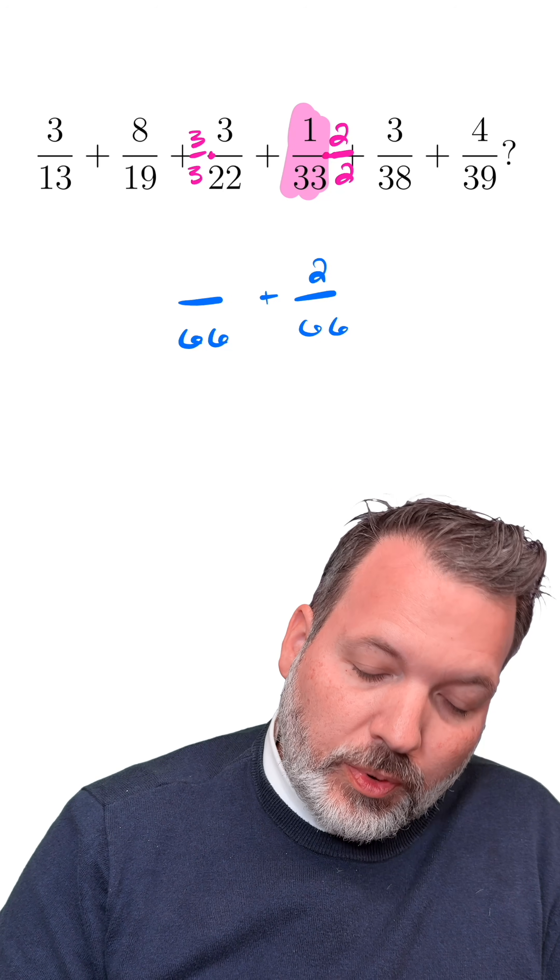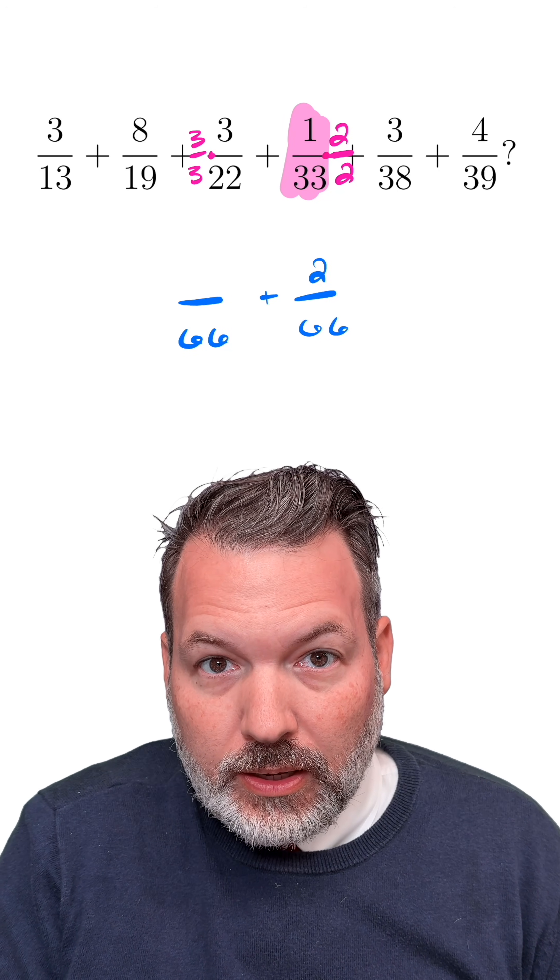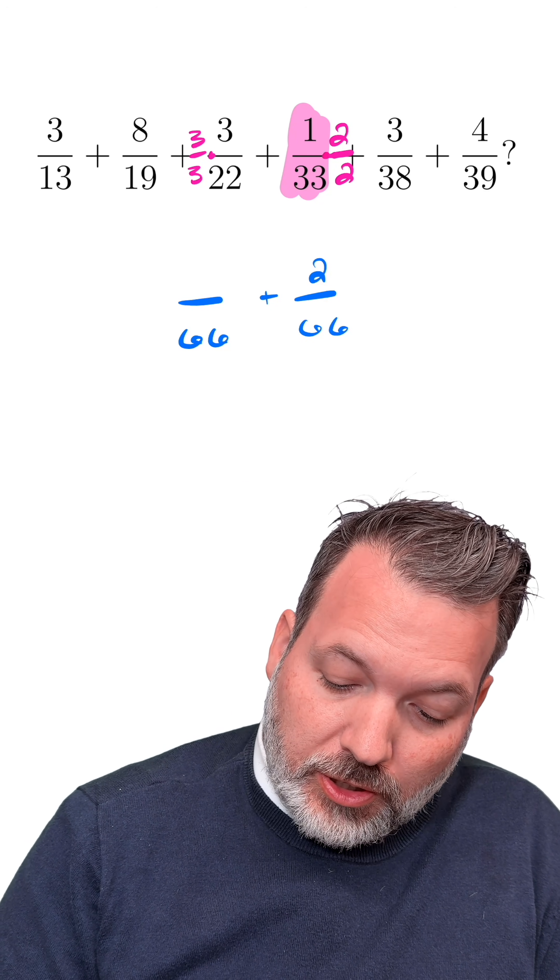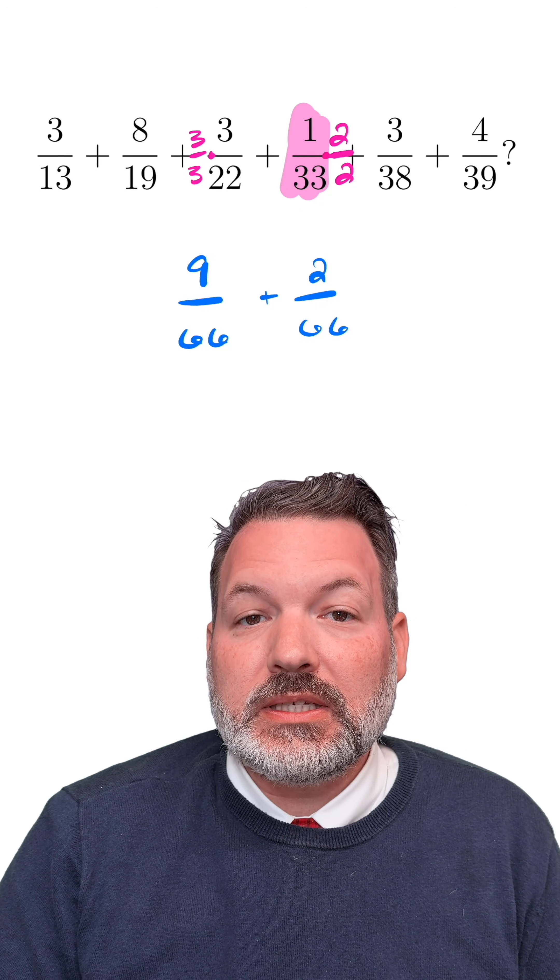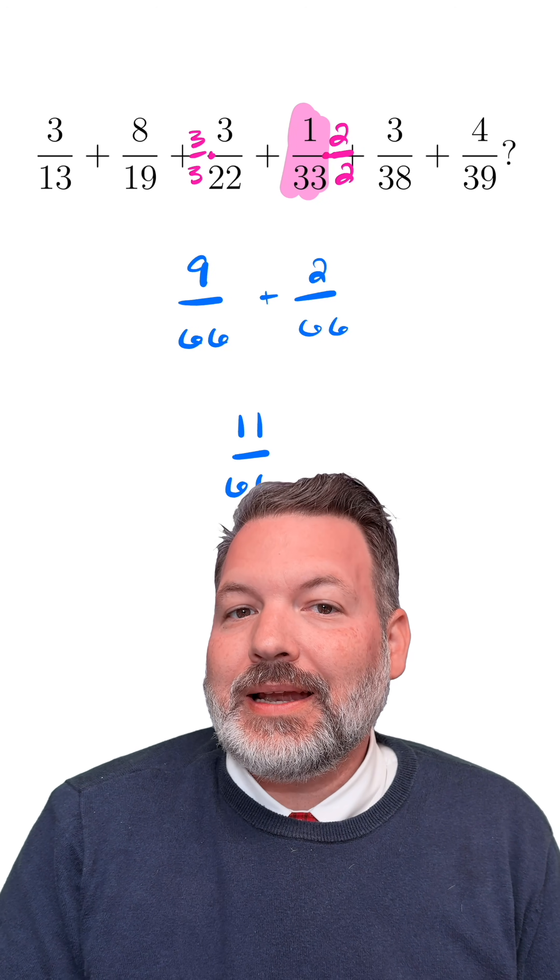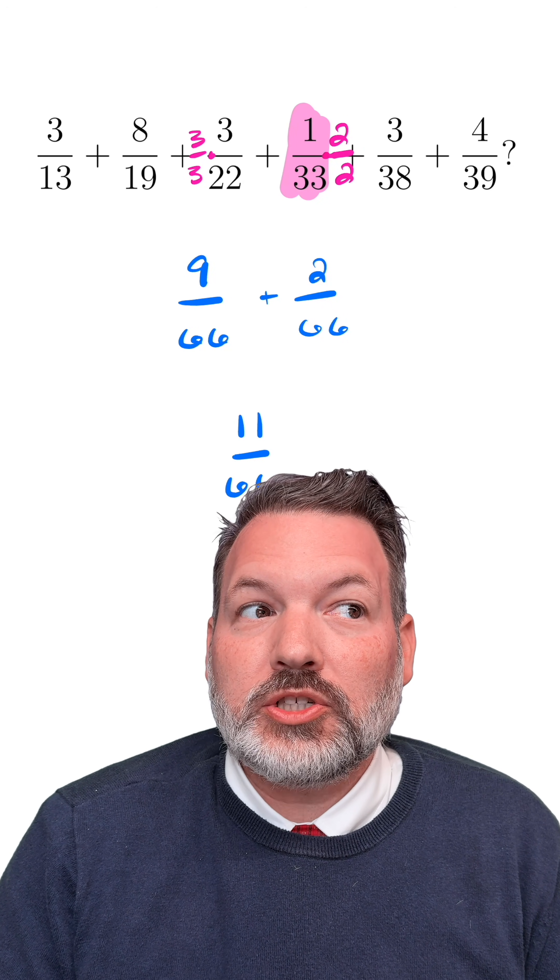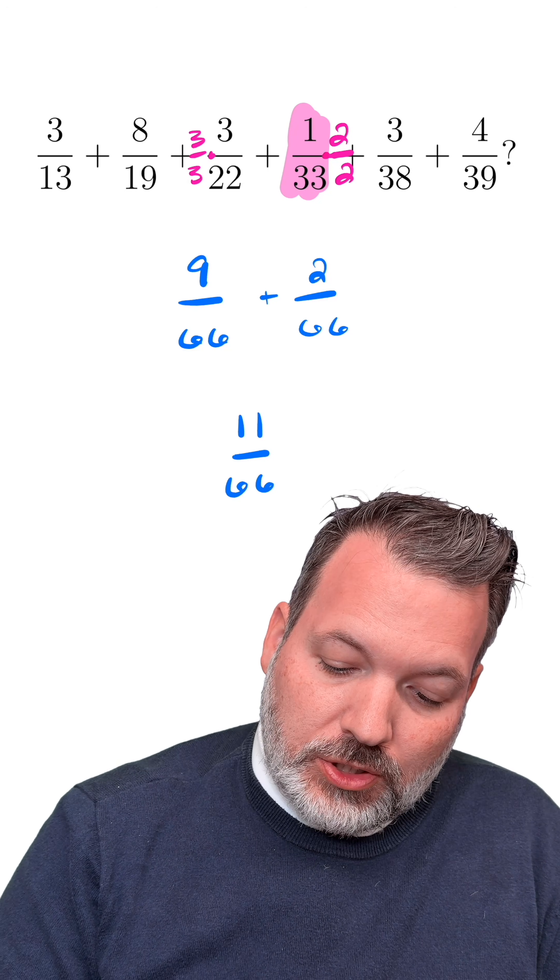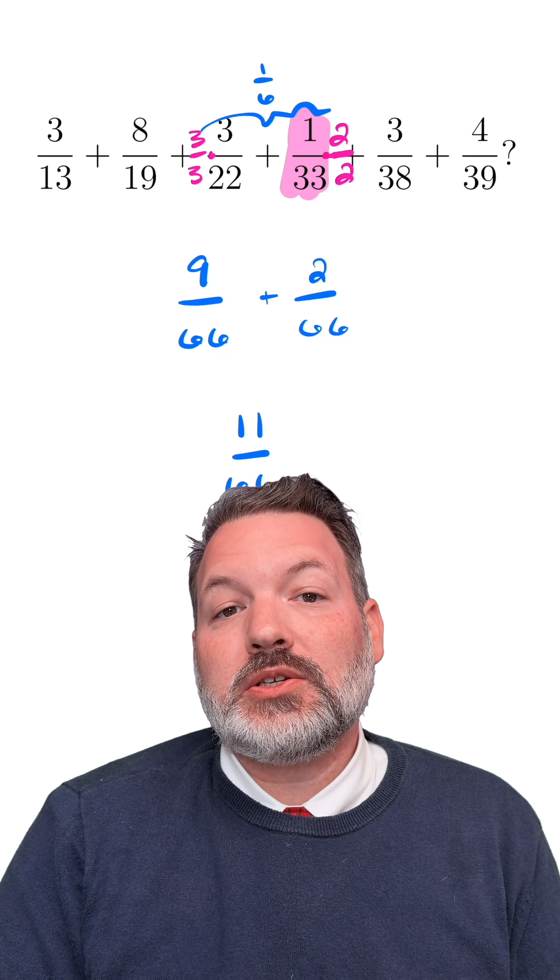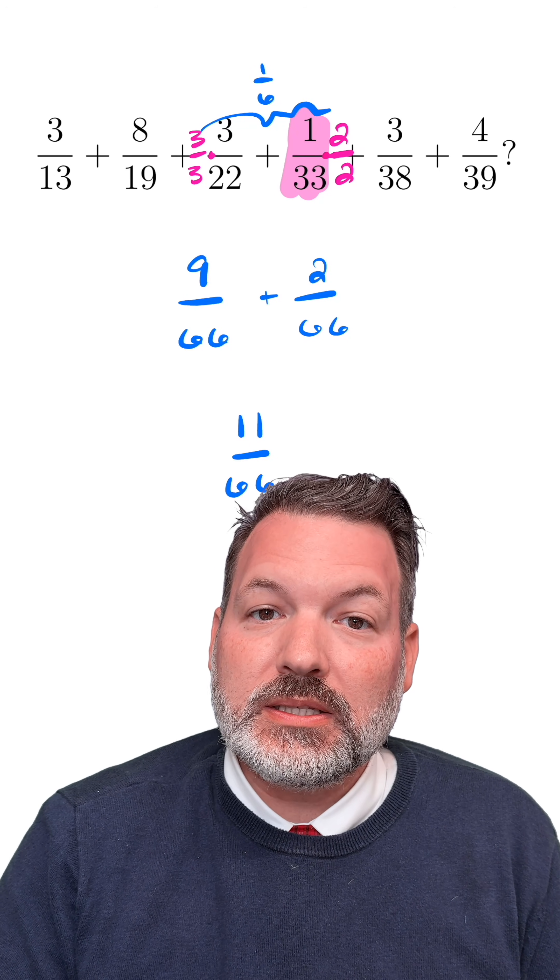Similarly, 3/22 we can multiply not by three, but by a form of one that looks like three: 3/3, which turns this into 9/66. What's interesting is when I add those together, I get 11/66, which simplifies to the much nicer 1/6. So these two fractions together make 1/6.